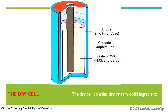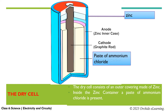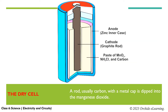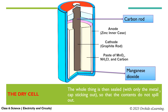The dry cell contains dry or semi-solid ingredients. It consists of an outer covering made of zinc. Inside the zinc container, a paste of ammonium chloride is present. Inside the paste, a cardboard container containing powdered manganese dioxide is placed. The cardboard container has microscopic holes in it — such materials are called porous materials — through which a chemical reaction takes place between ammonium chloride paste and powdered manganese dioxide. A rod, usually carbon, with a metal cap is dipped into the manganese dioxide. The whole thing is then sealed, with only the metal cap sticking out, so that the contents do not spill out.